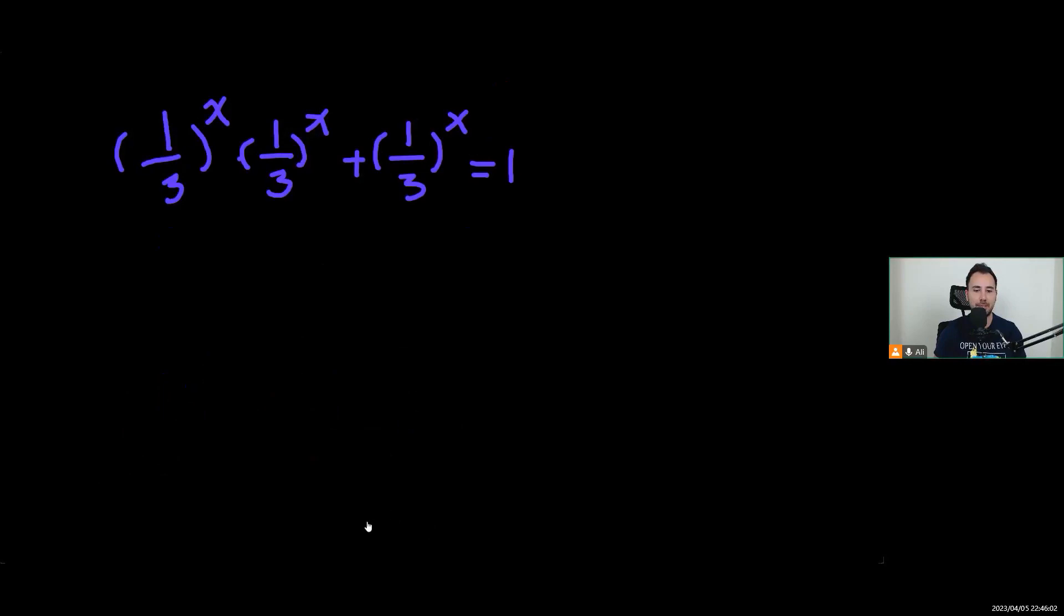Now let's just do something. Let's have 1 over 3 to power of x be t. So this becomes t squared plus t equals 1, so we have a quadratic equation.